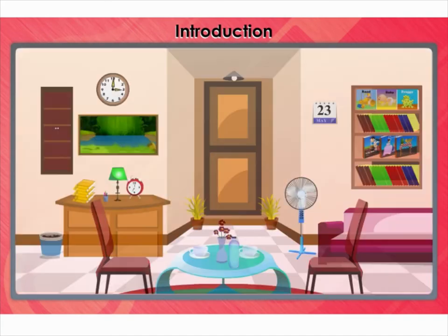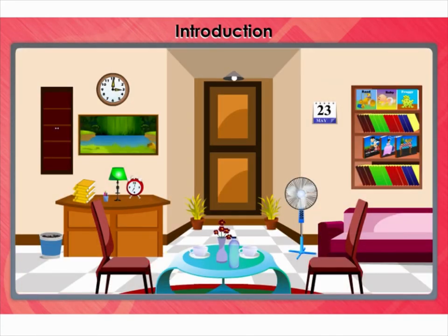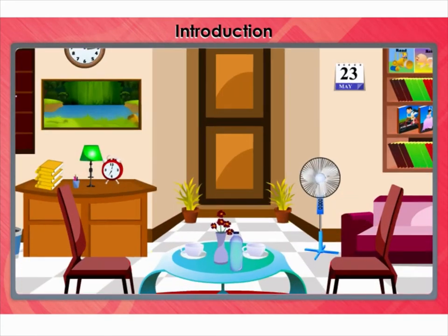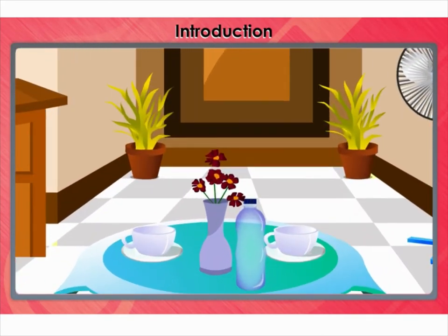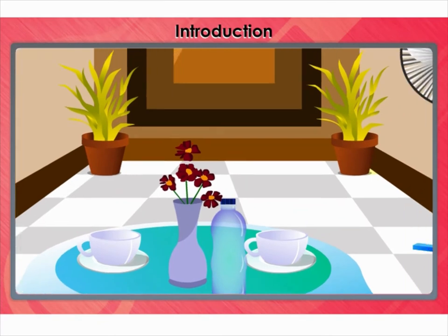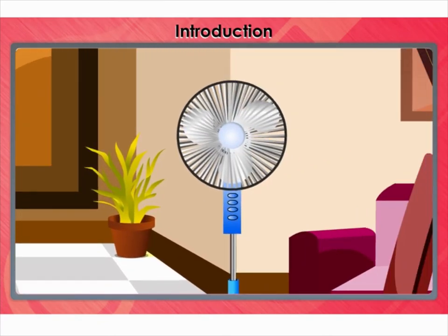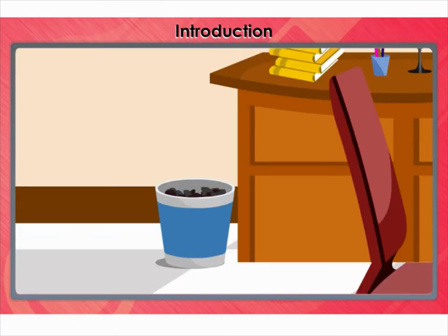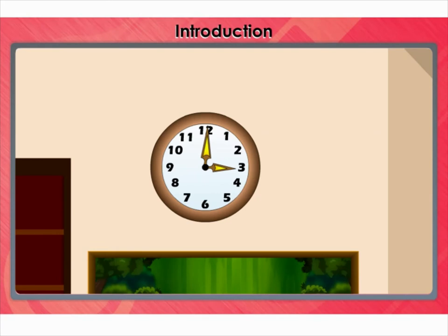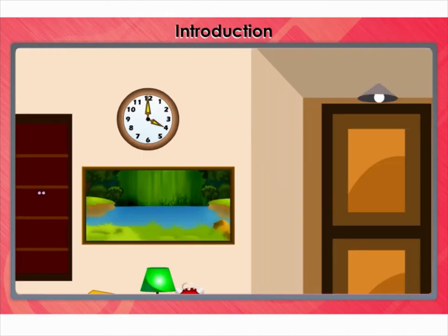Introduction. If you look around, you can see many objects in daily life which are round in shape, such as a table, cup and saucer, table fan, basket, clock, etc. In a clock, you might have observed that the second hand goes around the dial of the clock rapidly, and its tip moves in a round path. This path traced by the tip of the second hand is called a circle.